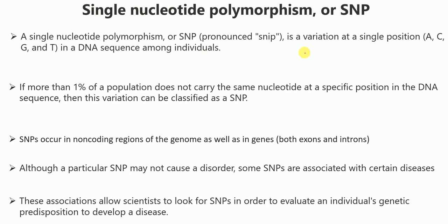It is called a single nucleotide polymorphism because there is a variation at a single position in the DNA. This position can be A, G, C, or T, because DNA has those four bases. If more than 1% of a population does not carry the same nucleotide at a specific position in the DNA sequence, then this variation is classified as a SNP.